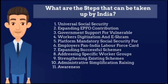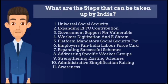What are the steps that can be taken up by India? Key recommendations include: universal social security, expanding EPFO contribution, government support for vulnerable workers, digitization and a unified SRAM platform, mandatory social security for employers, a Pan India Labour Force card, expanding successful schemes, addressing specific worker groups, strengthening existing schemes, administrative simplification, and raising awareness.